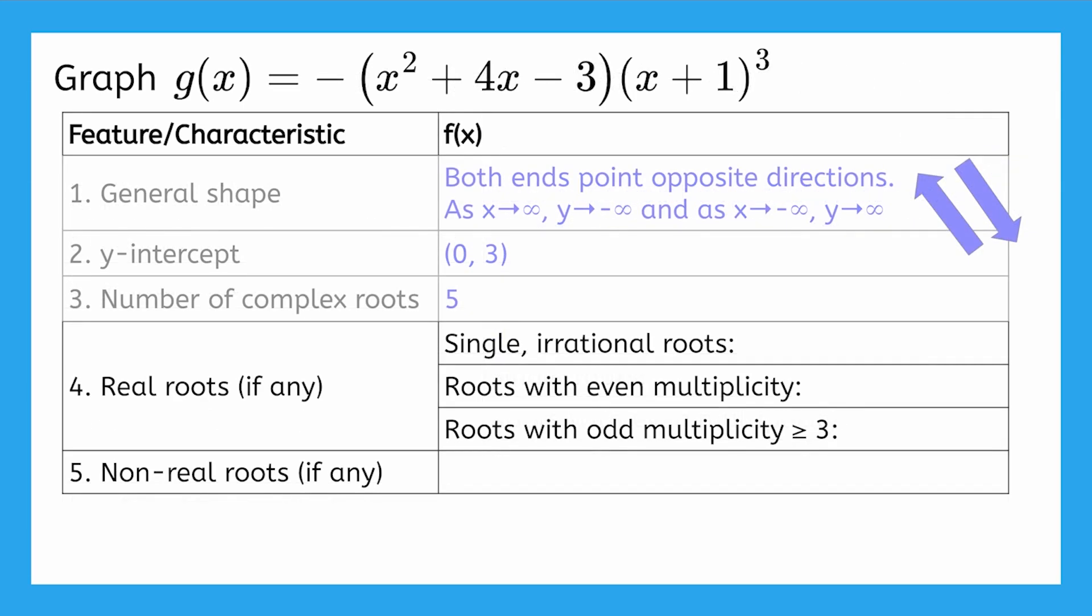Okay, here's the way I wrote g of x in its factored form. I had three separate factors of x plus 1, which I wrote as x plus 1 cubed, and a quadratic that I couldn't factor. I also factored out a GCF of negative 1.